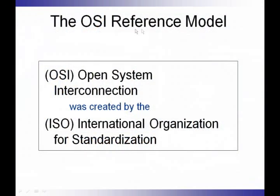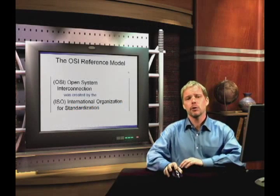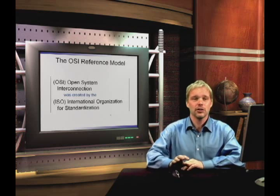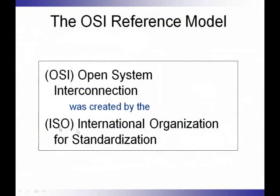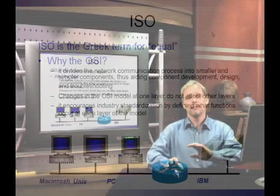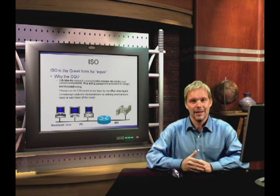Now we're going to talk about the OSI Reference Model, Open System Interconnection. This was created by a group called the ISO, or International Organization for Standardization. Notice that their letters do not line up with their name. That's because ISO is actually the Greek term for equal — they believe everything will be equal if they create all these rules, and it helped us create standardization.